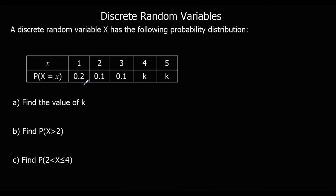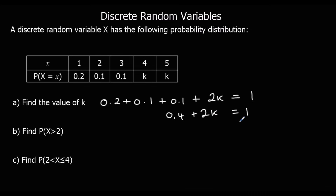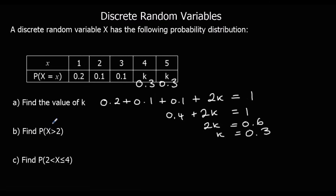We've got 0.2 plus 0.1 plus 0.1, plus our two k's, which have to add up to 1. So 0.4 plus our two k's have to add up to 1. If we subtract 0.4 from both sides, our two k's have to add up to 0.6, which means each k must be 0.3.